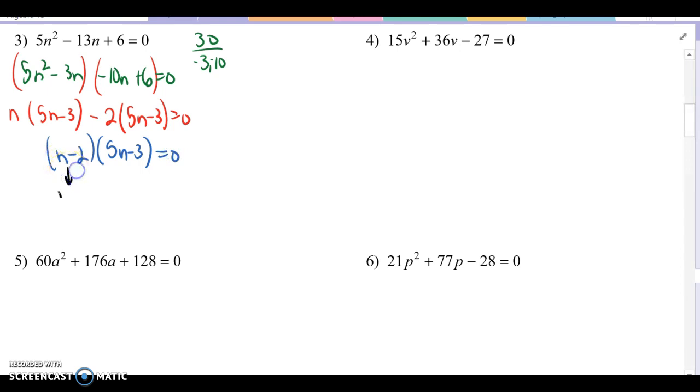And from here, set that equal to 0 and solve it. We get one answer if n equals 2. 5n minus 3 equals 0. Add 3 to both sides. Divide by 5. And we get the other answer to be positive 3 fifths.